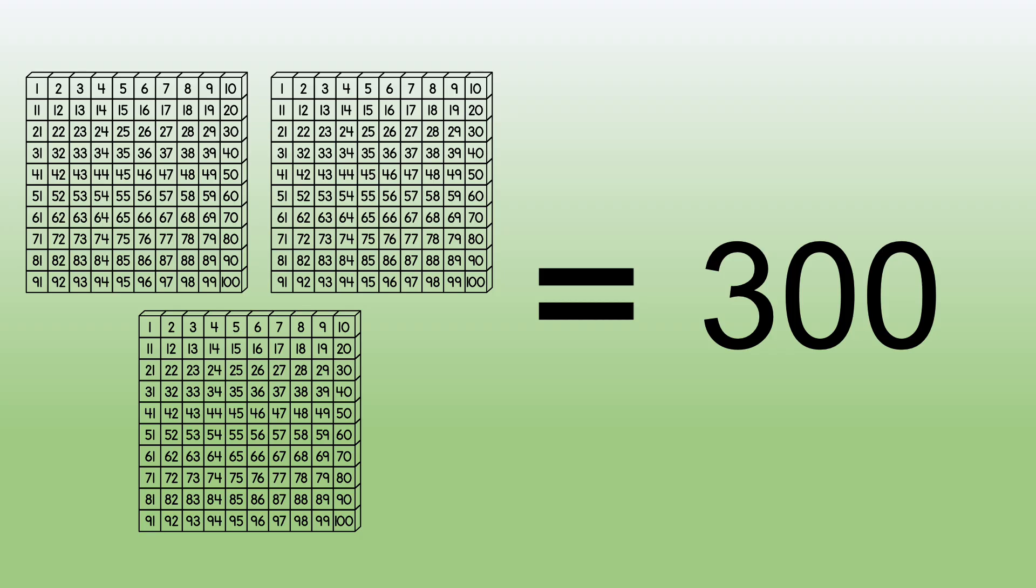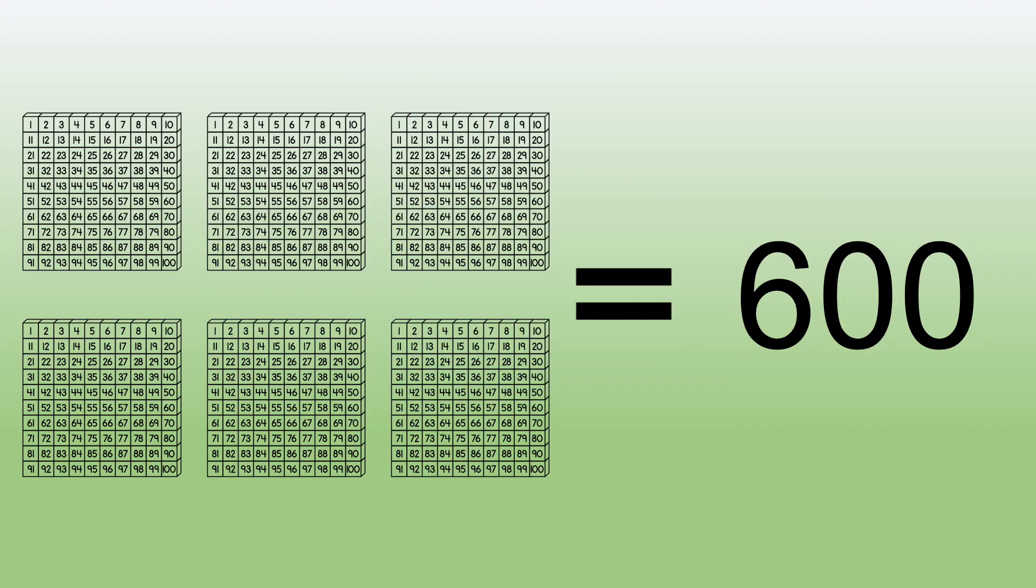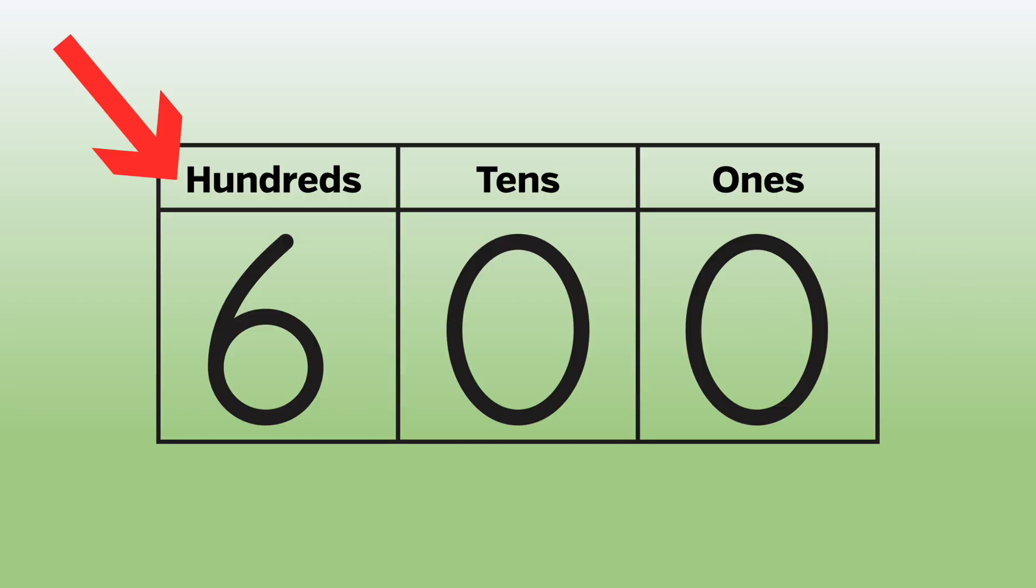Three flats equals 300. We have six flats here. We can skip count by 100 to see what the value is. 100, 200, 300, 400, 500, 600. The number of flats goes here in a place value chart.